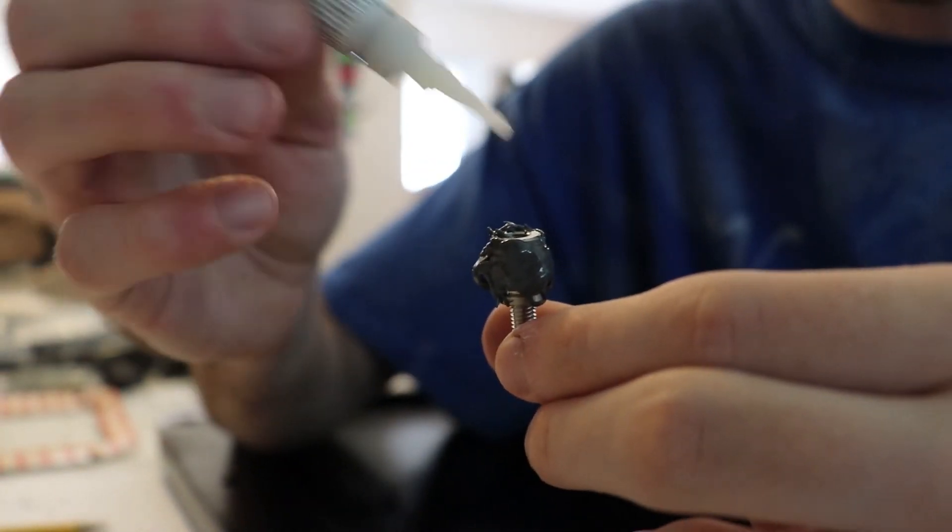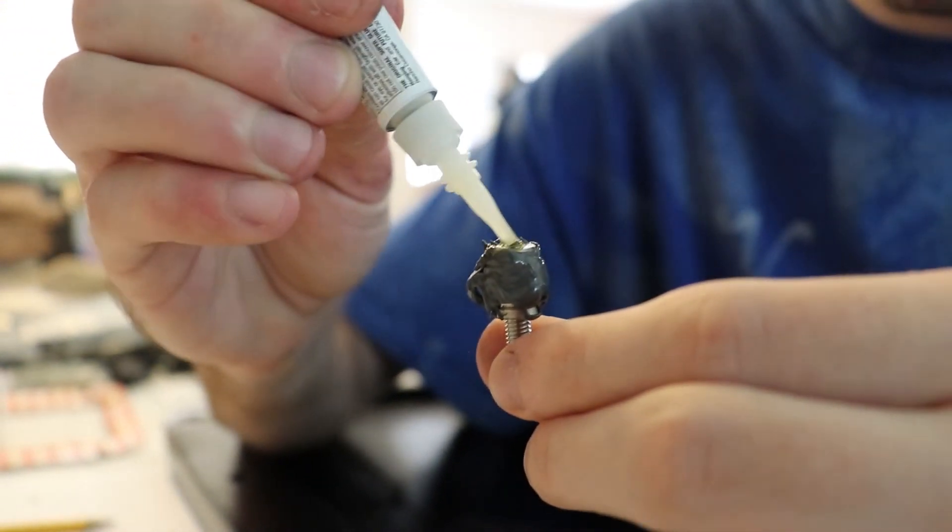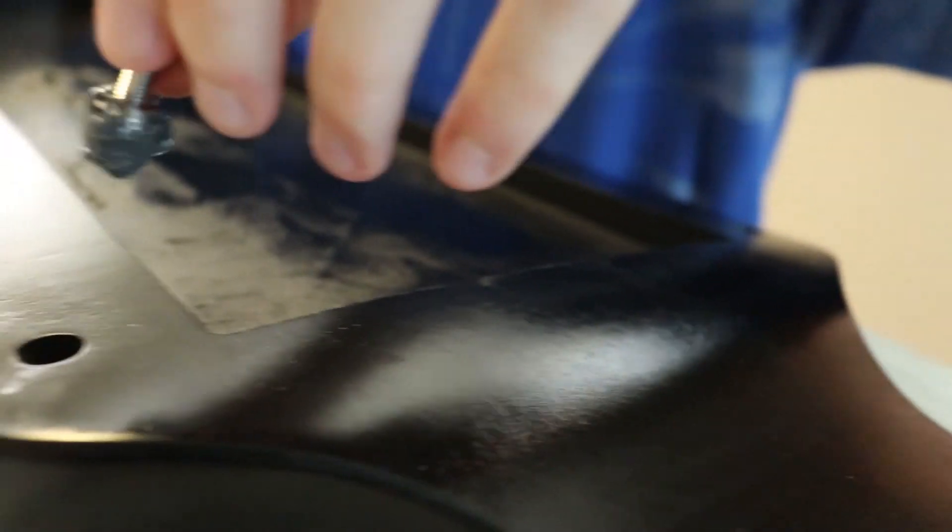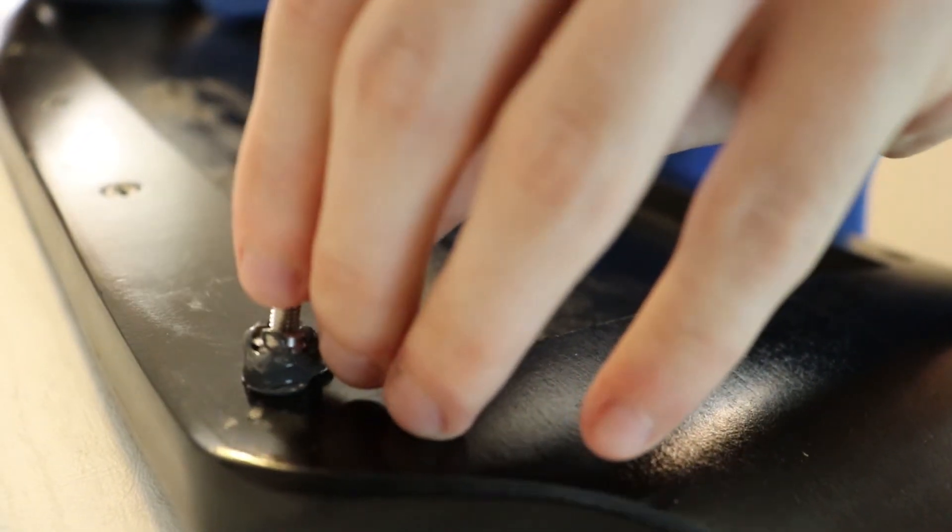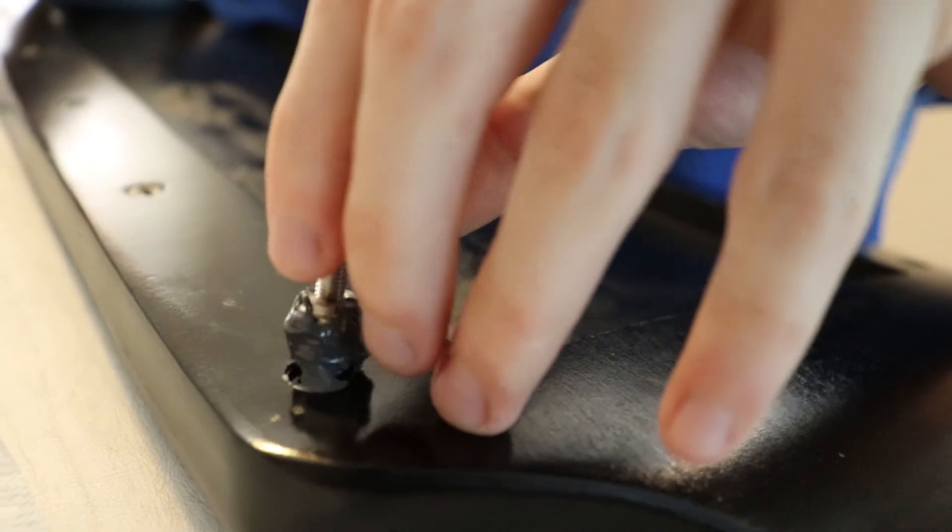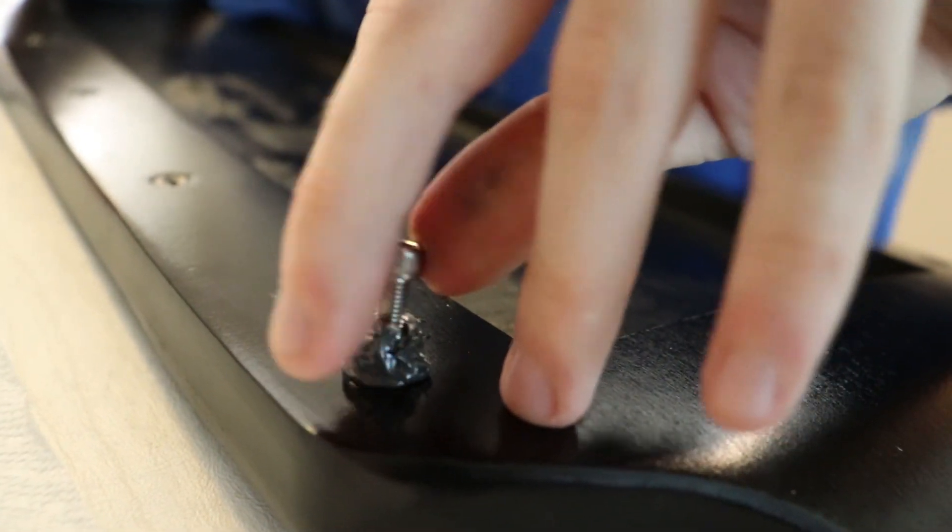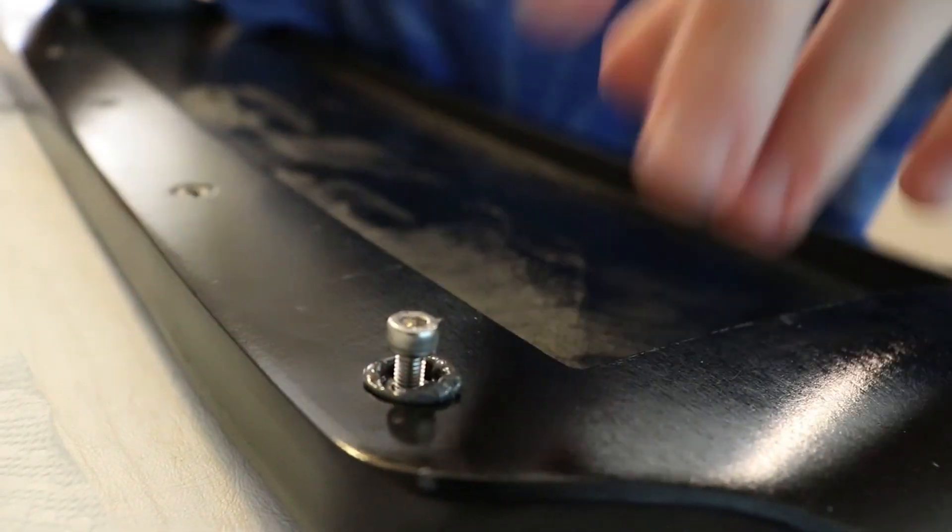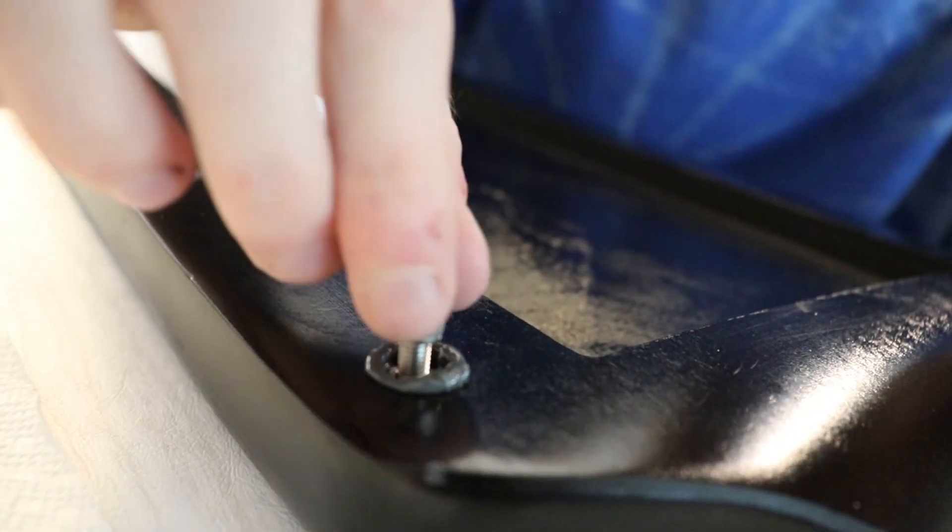Now I'm going to take super glue and apply a nice ring to the bottom, and I'm going to insert that directly into the hole where I want it and push down nice and tight. Then I'm going to unscrew the bolt.